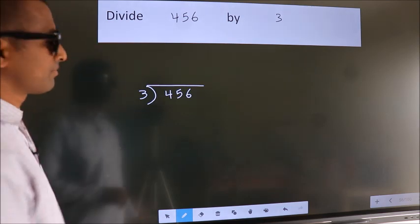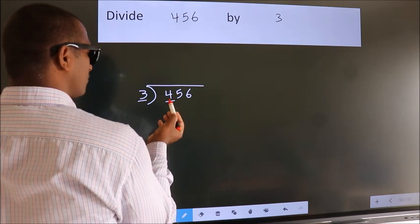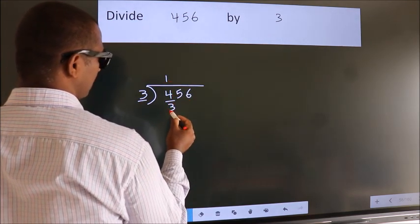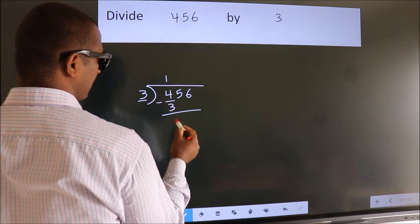Next. Here we have 4, here 3. A number close to 4 in the 3 table is 3 once 3. Now, we should subtract. We get 1.